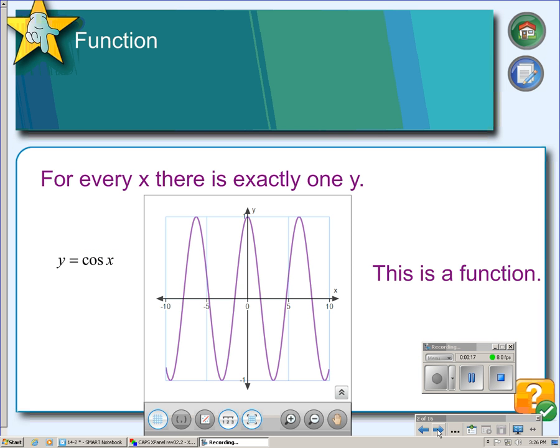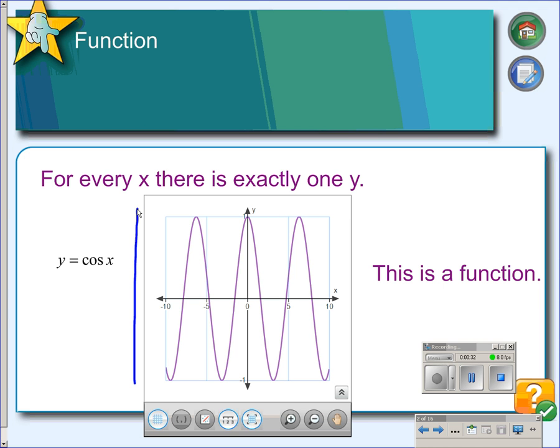To begin with, we're looking at a cosine function here, and this is the basic curve for a cosine function. If you remember the definition for function, the definition would be for every x, there's exactly one y. And if a thing is a function, it will pass the vertical line test, so that as you pass the line across the graph, it only touches in one point at one time. So, the cosine function is a function.